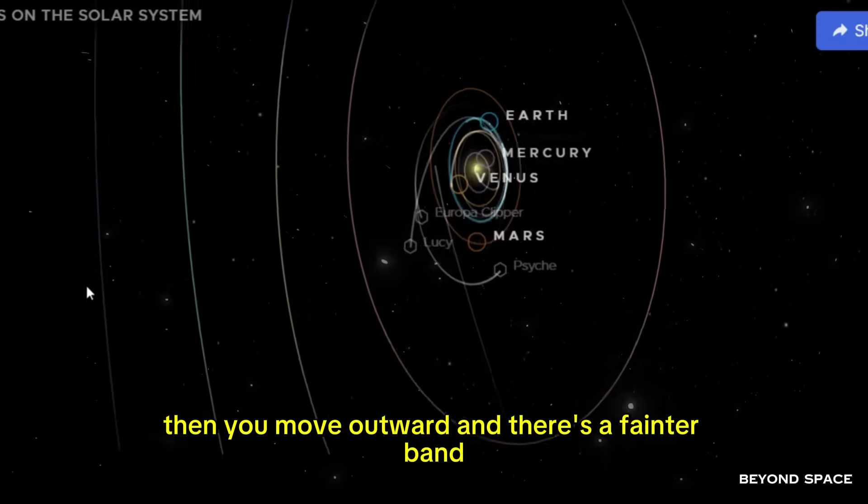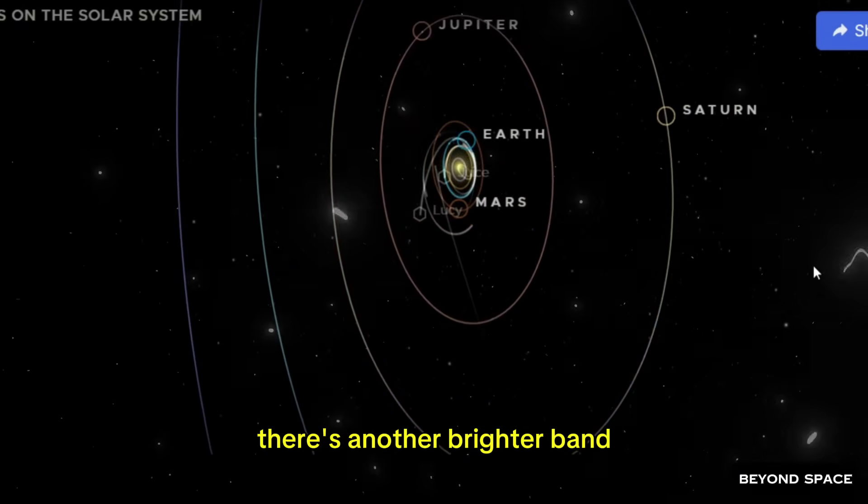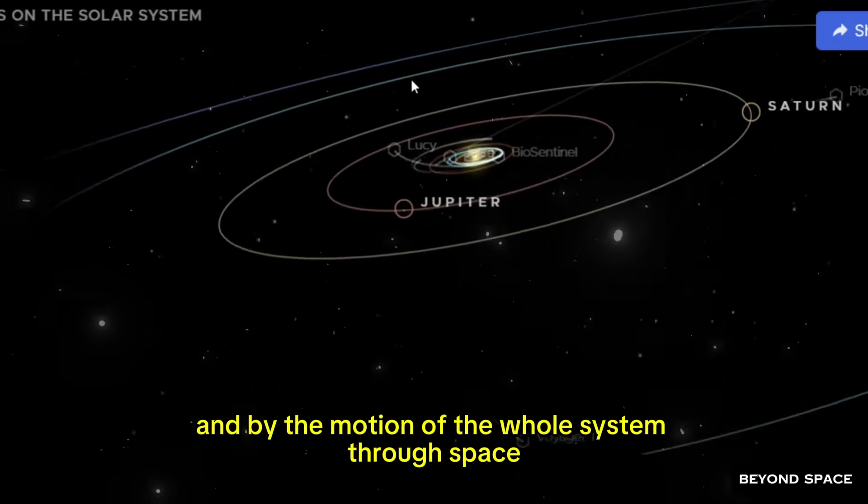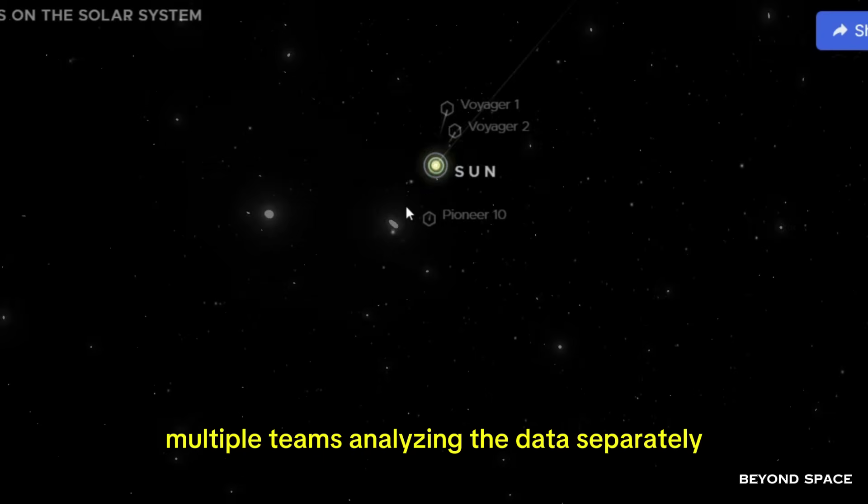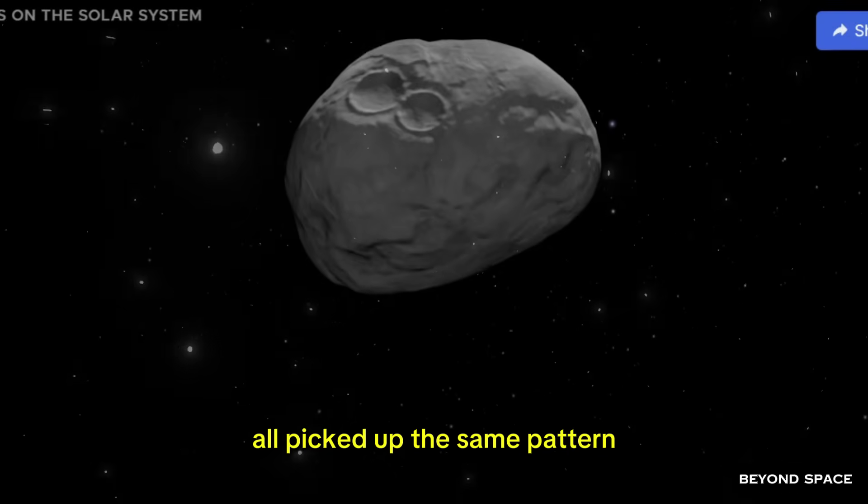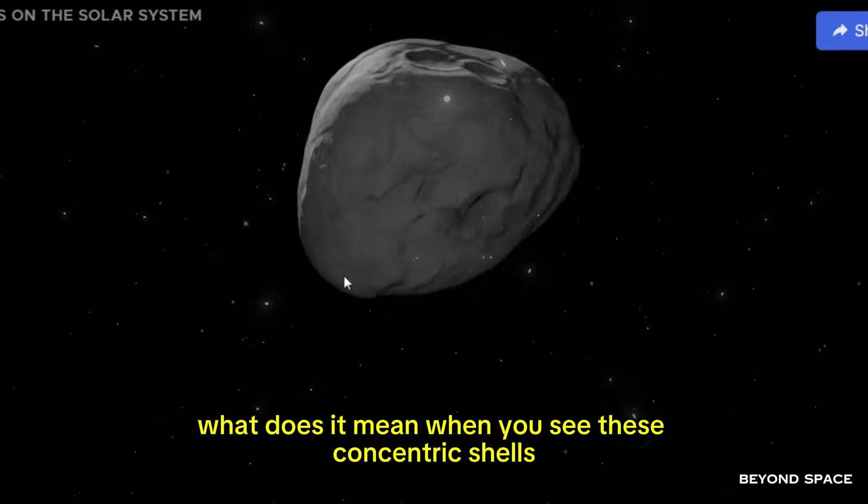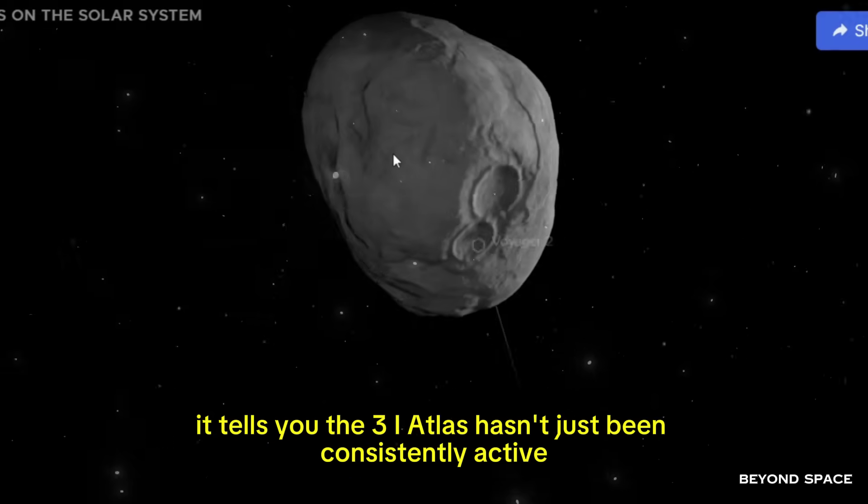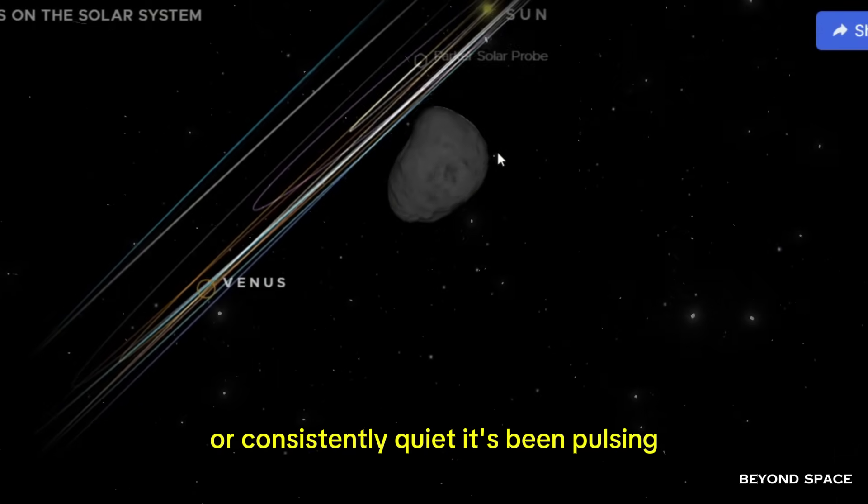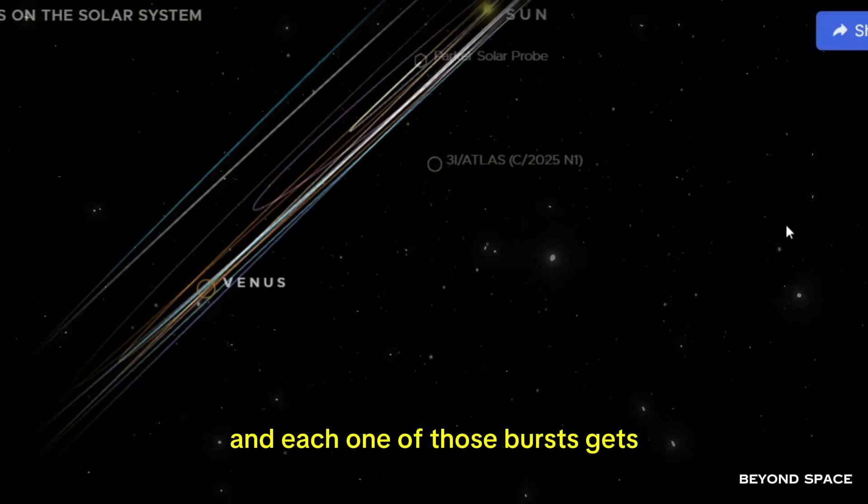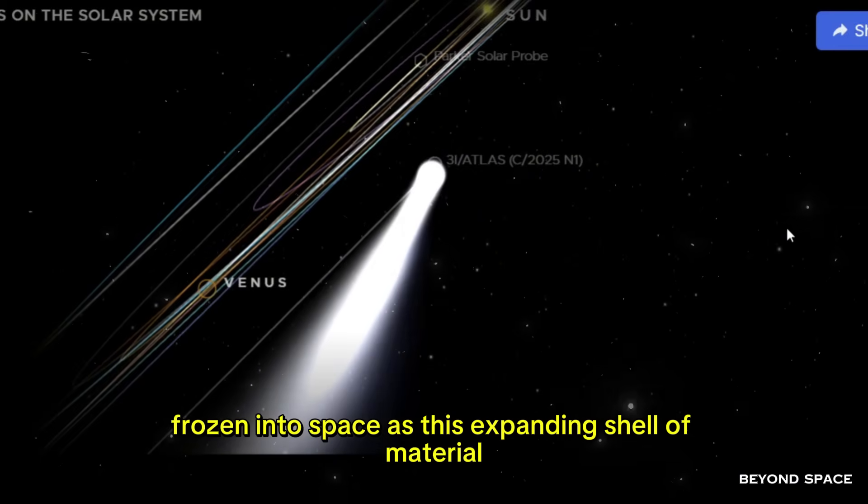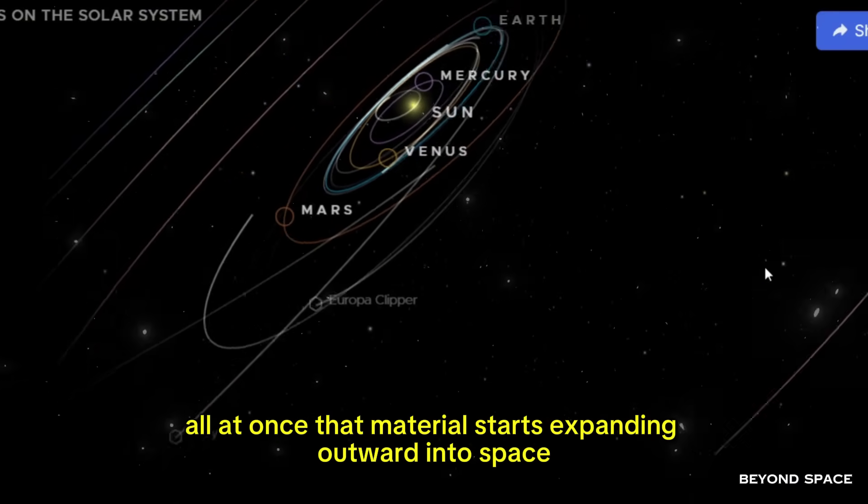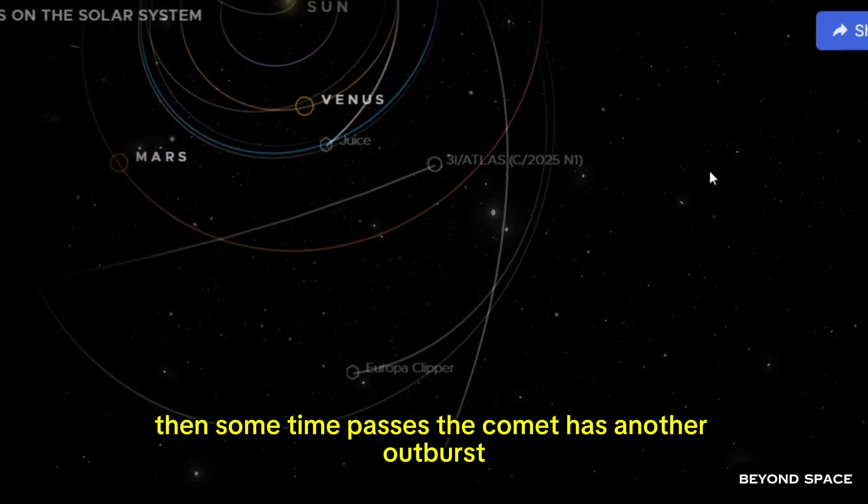Instead of water ripples, these are ripples made of dust and gas, frozen in space as they expand outward from the nucleus. There's a bright inner region. Then you move outward, and there's a fainter band, and then farther out still, there's another brighter band. They're not perfectly circular because everything's being warped by the jets shooting off the comet and by the motion of the whole system through space. But they're clear enough that multiple independent processing pipelines, multiple teams analyzing the data separately, all picked up the same pattern. What does this pattern tell us? It tells you that 3i Atlas hasn't just been consistently active or consistently quiet. It's been pulsing. It's been going through bursts of activity, separated in time, and each one of those bursts gets frozen into space as this expanding shell of material.